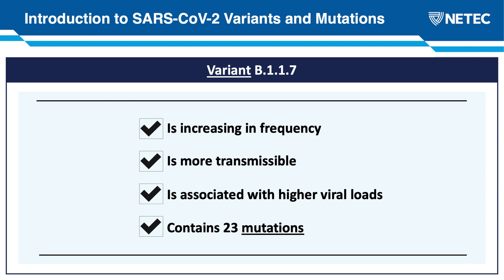Why do we care about B.1.1.7? There are a couple of findings that have made this a variant of concern. First, it's been increasing in frequency. Second, there's growing evidence from multiple lines of investigation that it's actually more transmissible — a person infected with B.1.1.7 will, on average, infect more people. Part of the reason is that it's associated with higher viral loads: someone with this variant tends to have a higher virus level on a nasopharyngeal swab. The most up-to-date concern is that it could also be associated with higher pathogenicity, with recent UK studies suggesting potentially higher mortality.